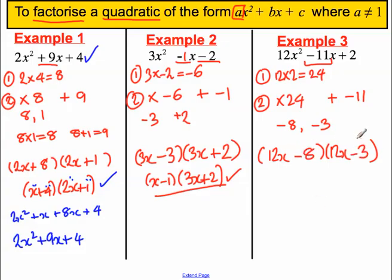Ask yourself, is there anything you can cancel in both brackets? Well here, what goes into 12x and 8? Well, 4 does.